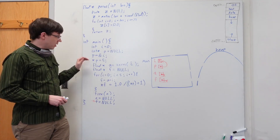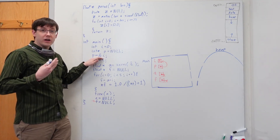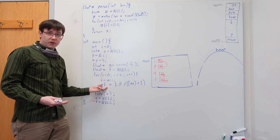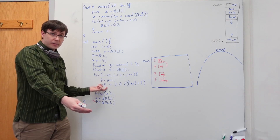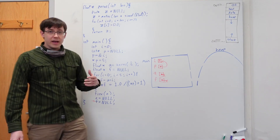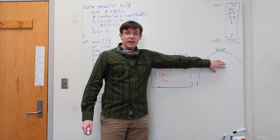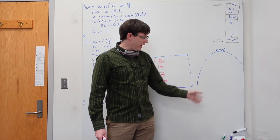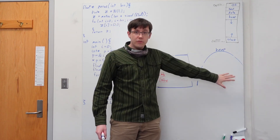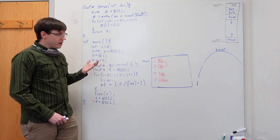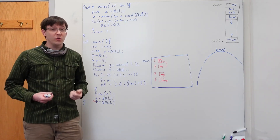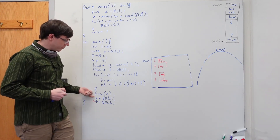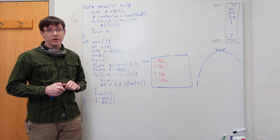The big takeaways here are: the ampersand operator for getting the address of a variable, the star or dereference operator for following a pointer, and that when we call malloc we are allocating data on the heap, which we draw in the stack diagram as a separate region for heap memory. We can pass around pointers to dynamically allocated memory, and when we're done with it we should call free and set any pointers to that memory to null.